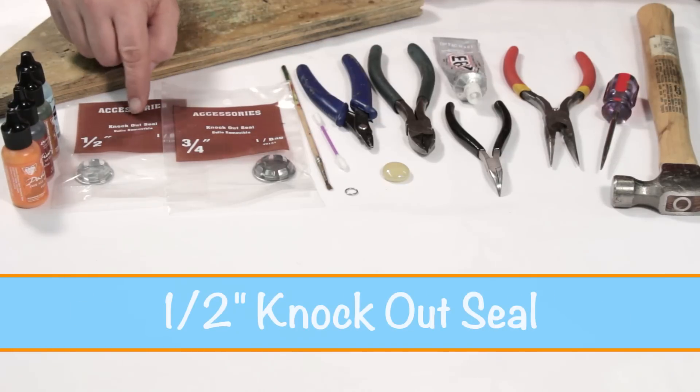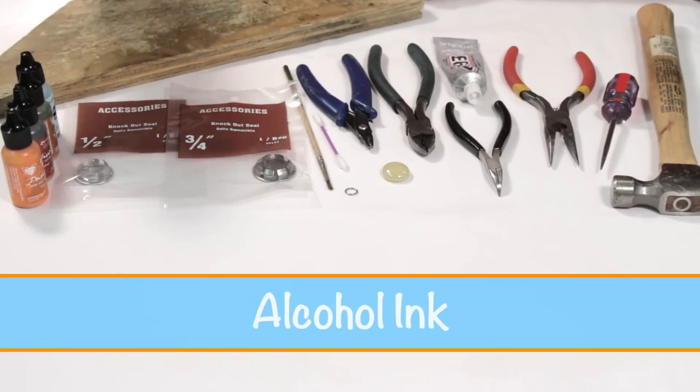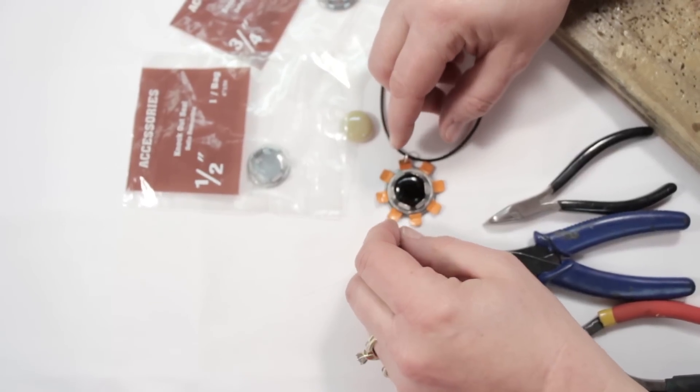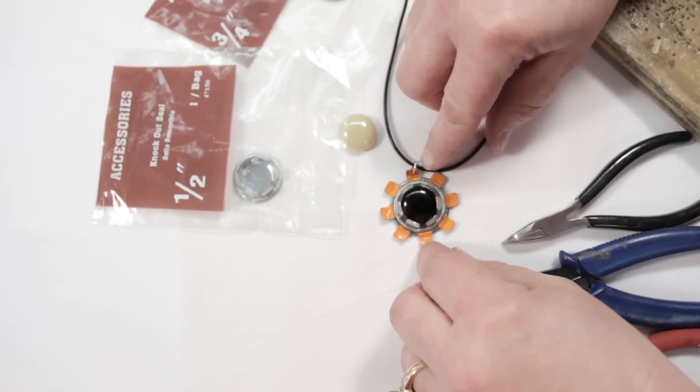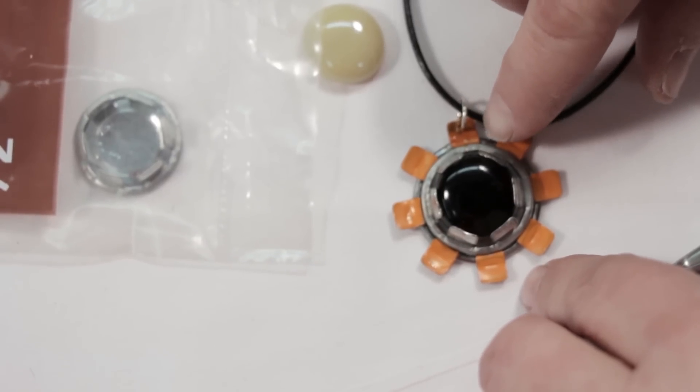A three-quarter inch knockout seal and a half inch knockout seal—these are from the hardware store—alcohol ink, and a wood block. Today we're going to be making this steampunk pendant. It's in the shape of a sunflower and we're going to be using parts from the hardware store.